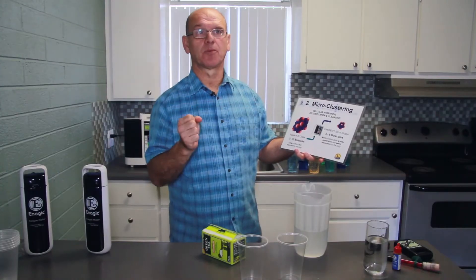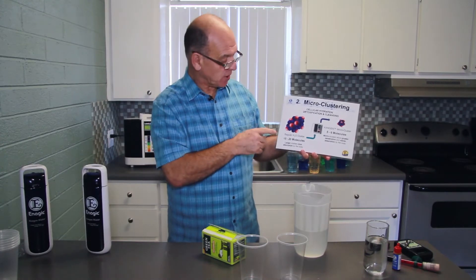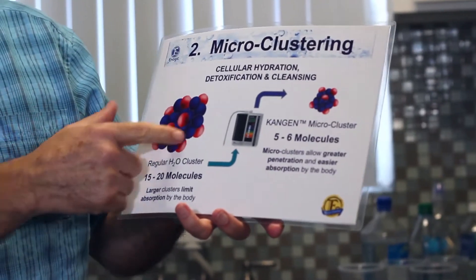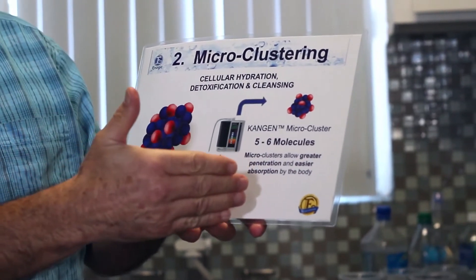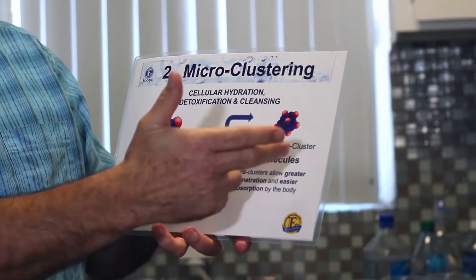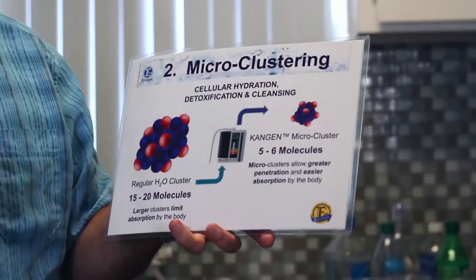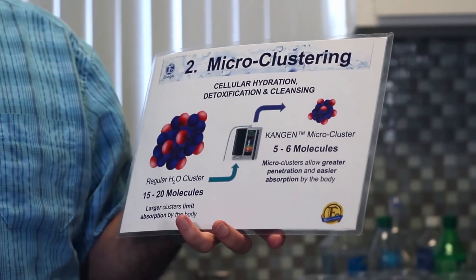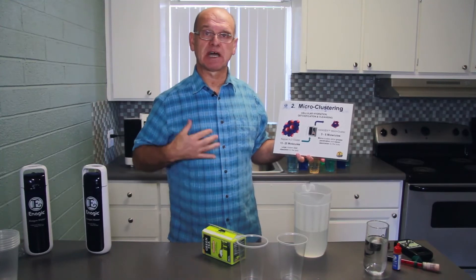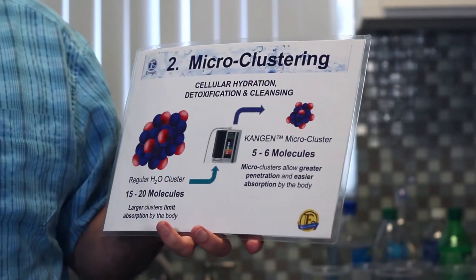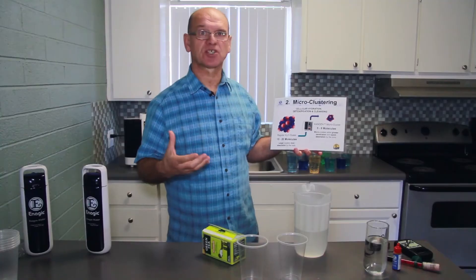Basically, Kangen water is small water. Normal water is 15 to 20 molecules, but once the water is ionized through the Kangen water machine, it becomes smaller — it goes to 5 to 6 molecules. This enables the water to penetrate our cells and hydrate the body a lot better than normal tap water or bottled water.